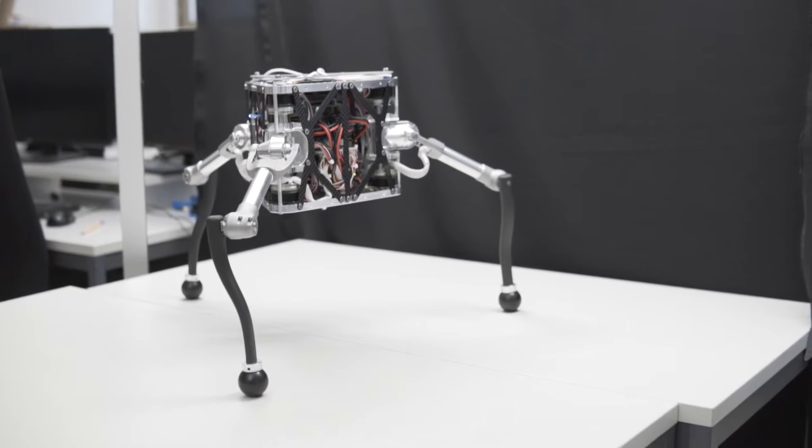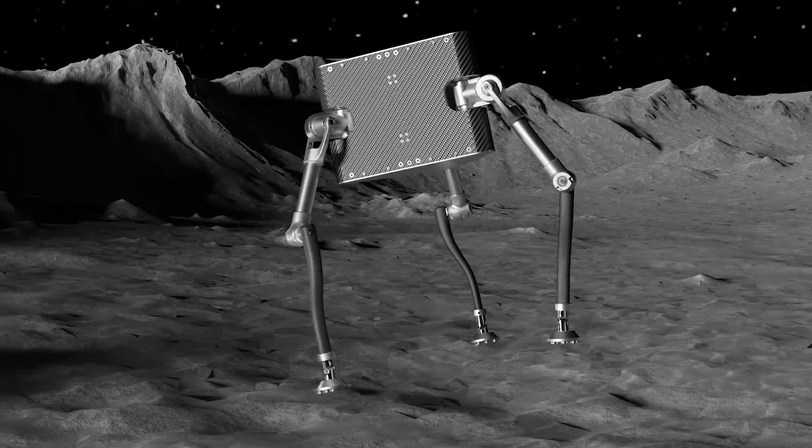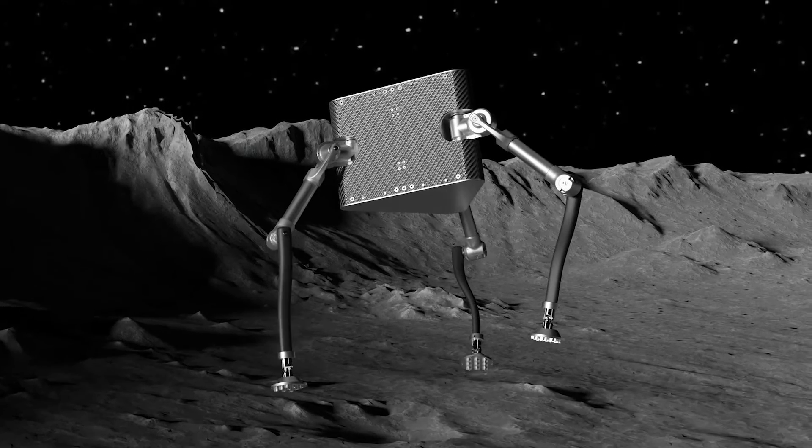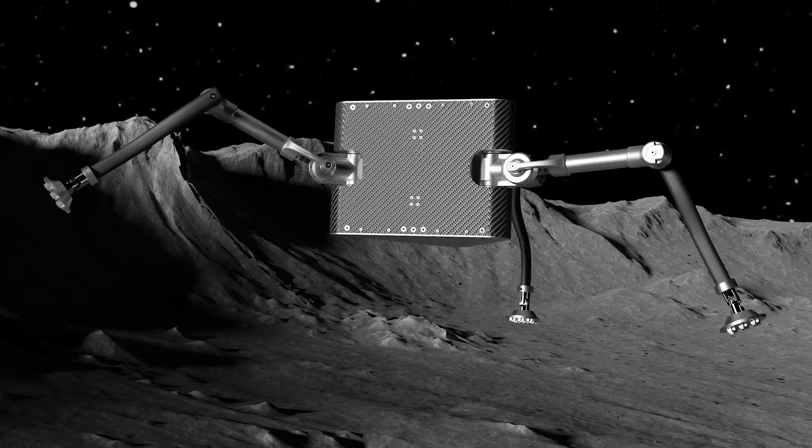We present Spacehopper, a three-legged mobility platform for low-gravity environments. The robot uses its legs to jump and reorient during flight phases, allowing it to absorb the landing. This allows for precise locomotion.